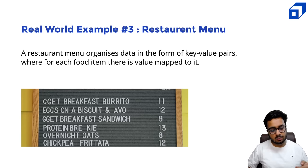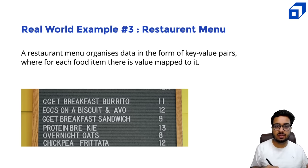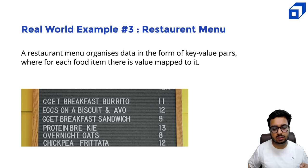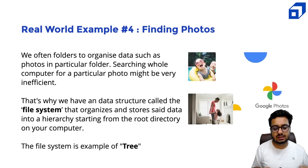Let us look at one more example. Sometimes when you go to a restaurant and want to order a burger, you quickly get an answer that the burger costs 100 rupees. What is happening? For every item, there is a value attached to it — for every key there is a value. So data can be stored in the form of key-value pairs. This is where data structures like hash maps come into the picture.